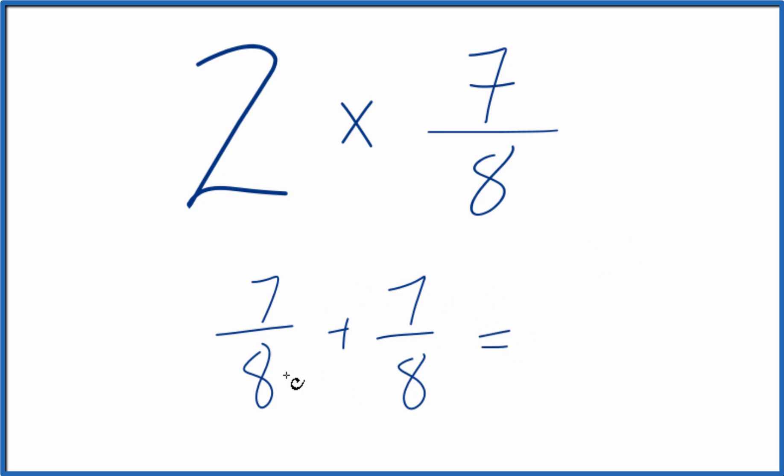And when we add fractions, if the denominator is the same, we just keep that the same, add the numerators. 7 plus 7, that's 14. So 2 times 7 eighths, that equals 14 eighths.